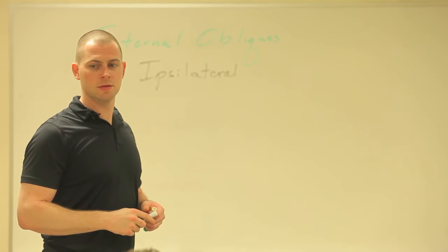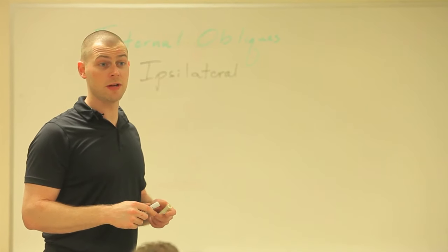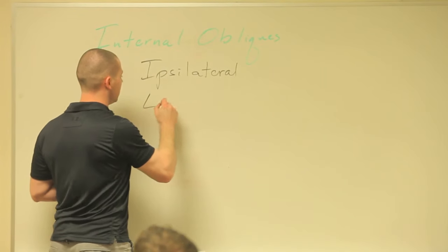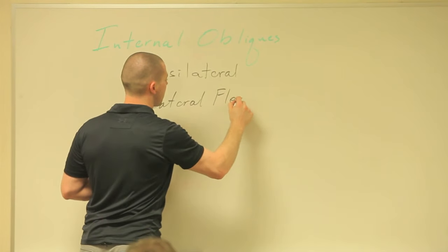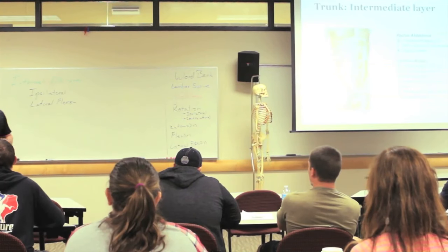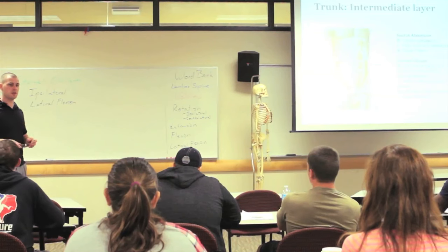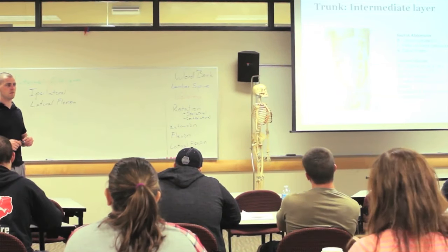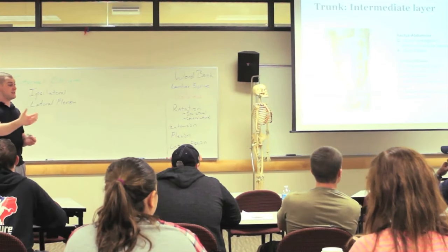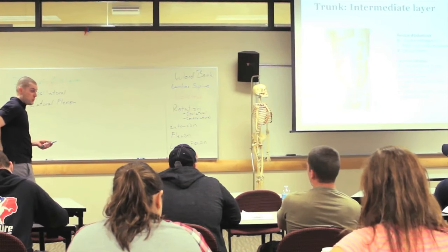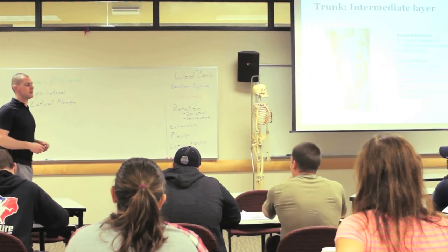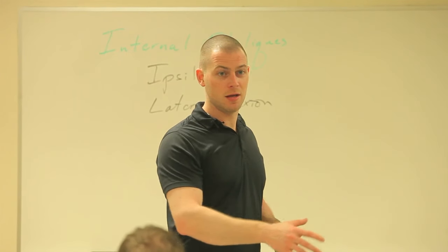What else might it do? Lateral flexion — yeah, it's on the side of the lumbar spine, so I'll say lateral flexion. Can it contribute to sagittal plane motion like flexion or extension? Flexion. Why flexion? It's still in front of the lumbar spine, right? Remember your lumbar spine is way back here. So all these anterior core muscles that we give so much attention to in popular media — they're pretty much all flexors.